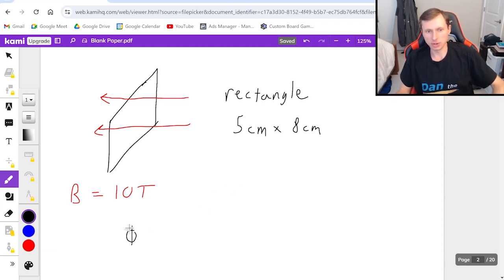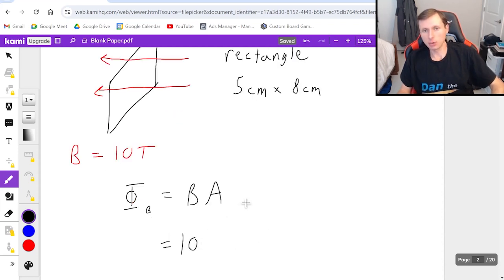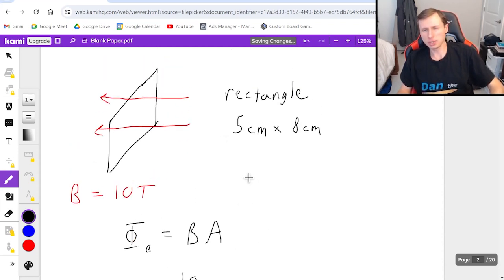First of all, it is not zero. It is going straight through it like we want it to. So this is the maximum flux actually. All I got to do is B times A. I can ignore the cosine theta because that's just going to be one. So B is 10. Area of a rectangle is length times width. I got to convert centimeters to meters, so it is really 0.05 times 0.08.